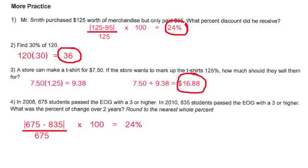For this, they buy it for $7.50, but they want to mark it up, so that's 100% of the price. They want to mark it up 125%. So what you have to do is take 125% of $7.50, which is $9.38, and you have to add that to the original price. And so that's how I got $16.88.